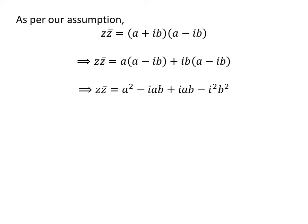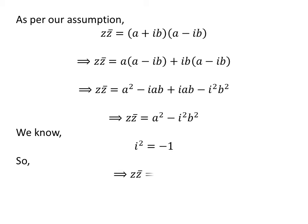Again, distributing gives us z times the conjugate of z is equal to a squared minus i times a times b plus i times a times b minus i squared times b squared. We know the square of the imaginary unit is minus 1. Applying this property gives us z times the conjugate of z is equal to a squared plus b squared.